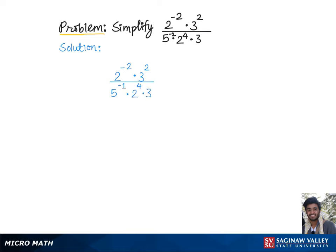Let's first change the negative exponents into positive using the rule of negative exponents. According to this rule, 5 to the negative 1 in the denominator becomes 5 in the numerator times 3 squared divided by 2 to the negative 2 in the numerator, which becomes 2 squared in the denominator, times 2 to the 4th times 3.